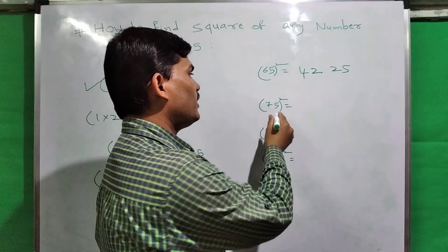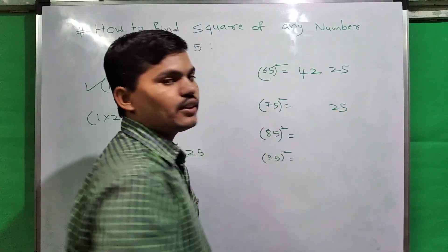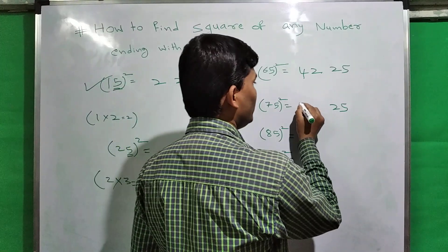This is 75. Write down first: 5 square is 25. This is 7. 7's next number is 8. 7 times 8 is 56. So write down here: 5625.